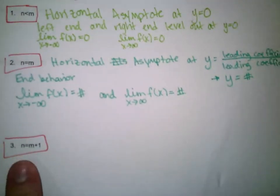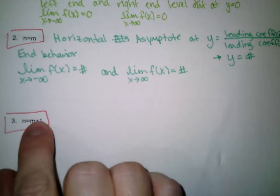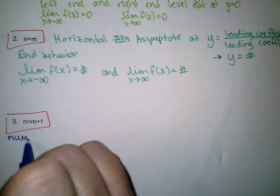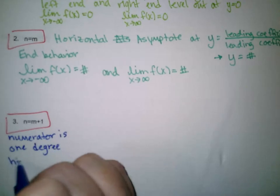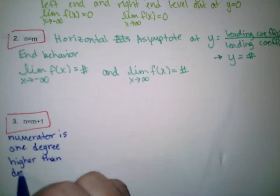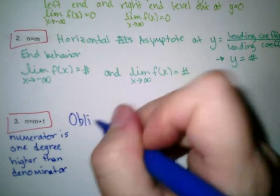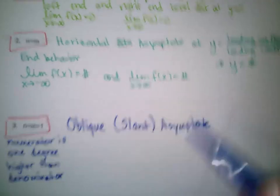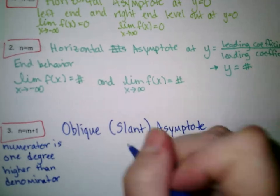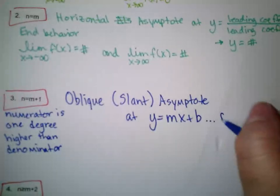Case three: when the degree of the numerator is one higher than the denominator — for example, numerator squared with denominator to the first, or numerator to the sixth with denominator to the fifth — this gives an oblique or slant asymptote instead of a horizontal one. The asymptote will be a line y equals mx plus b with a slope and y-intercept. The way to find it is by polynomial long division.